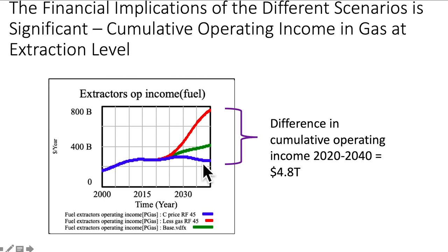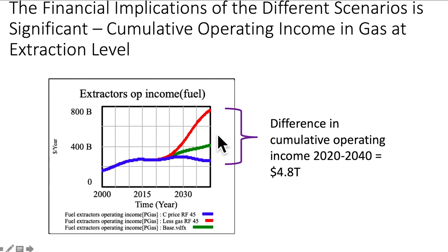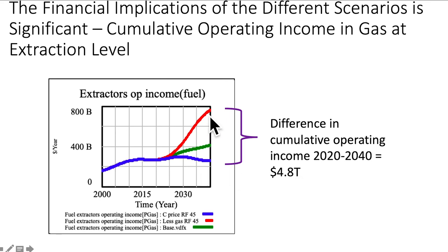Following the blue line for the carbon price scenario — under the scenario with less coal, less oil, and more electrification — we have significantly more extraction and production of natural gas. Adding up the cumulative operating income from 2020 to 2040, that's about a $4.8 trillion difference between those two scenarios.